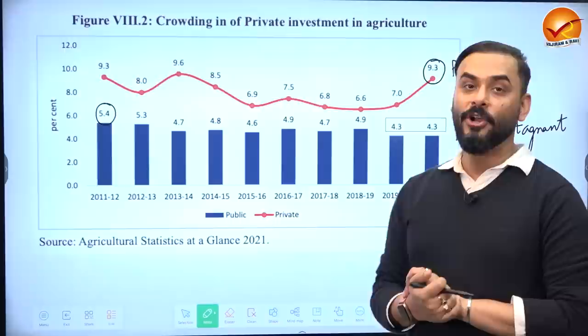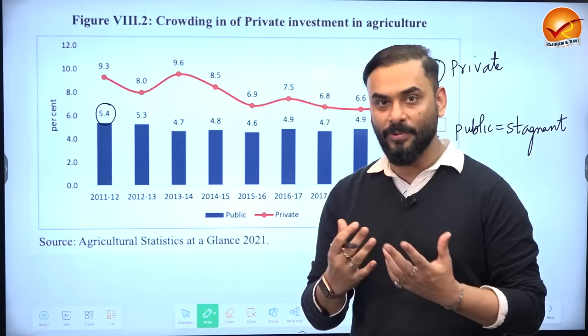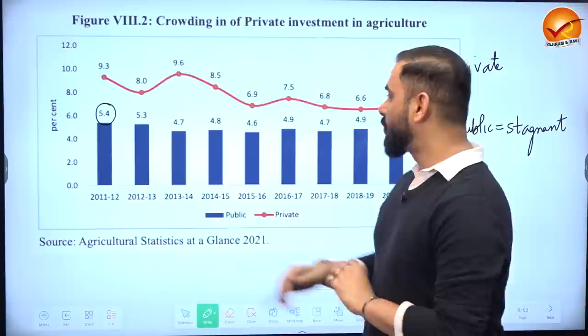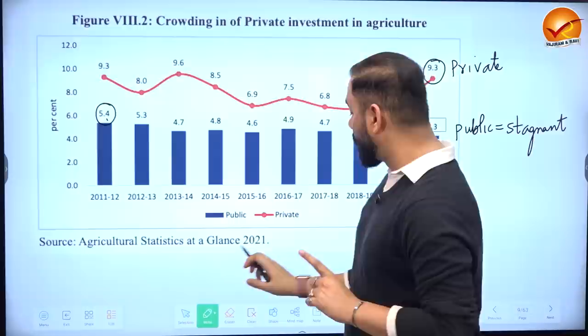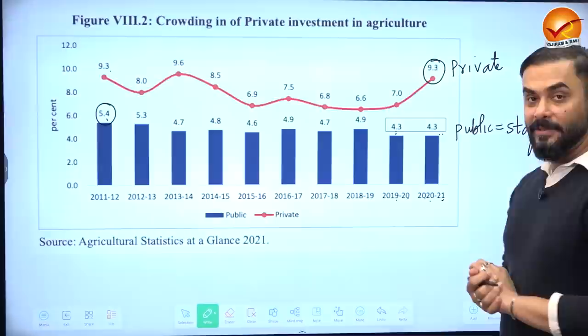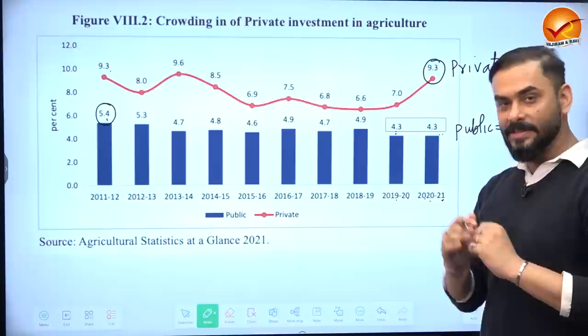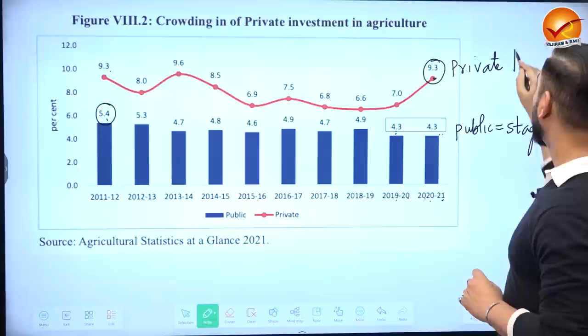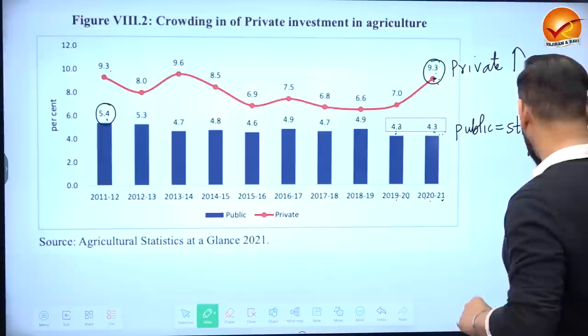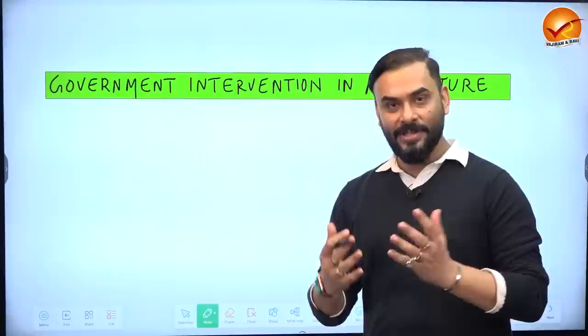On agricultural investment: in 2011-12, government investment was 5.4 percent and private sector investment was 9.3 percent. Looking at 2019-20 and 2020-21, government investment has become stagnant — it has not increased, which is not a good sign. However, private investment has increased and remains at 9.3 percent. So there is a large gap: private investment is doing well but government investment has stagnated, according to the economic survey.